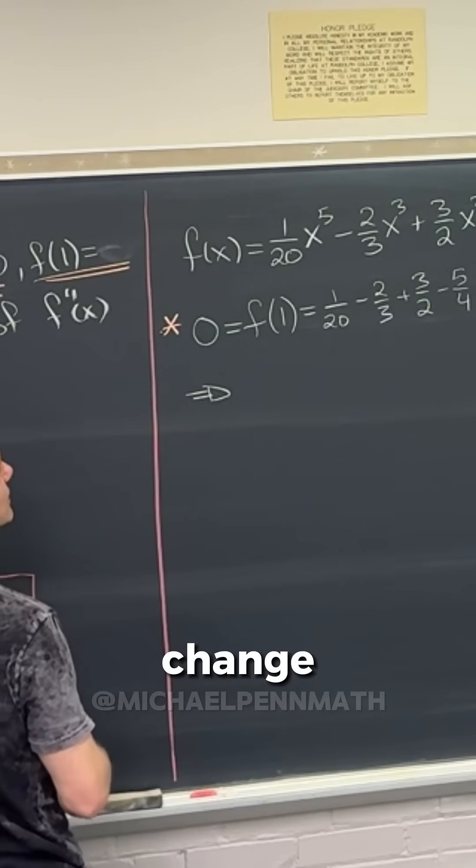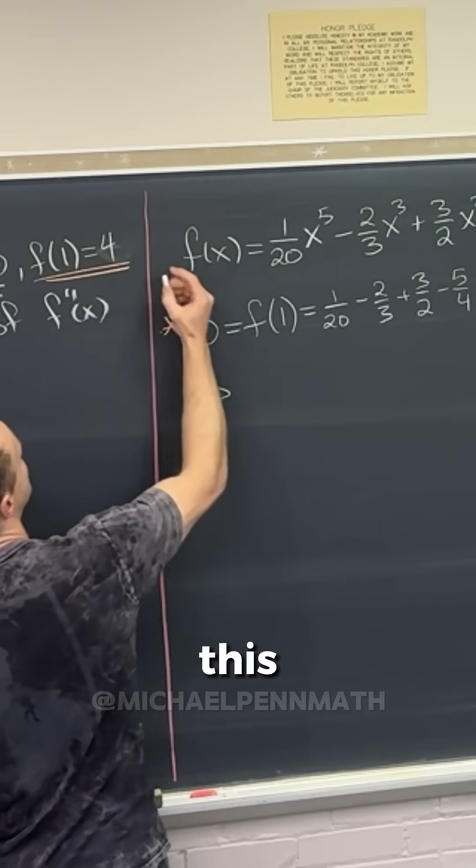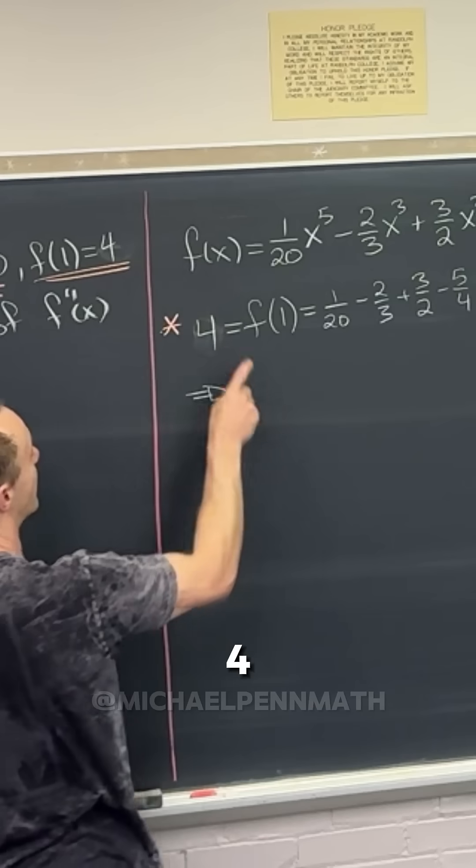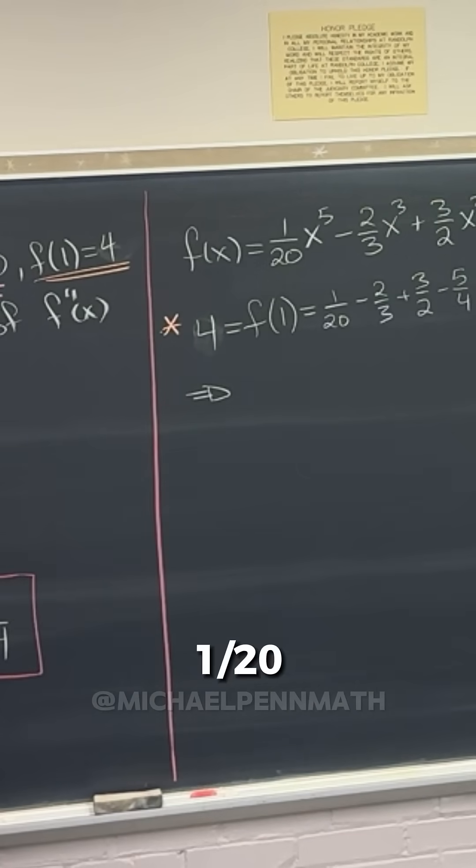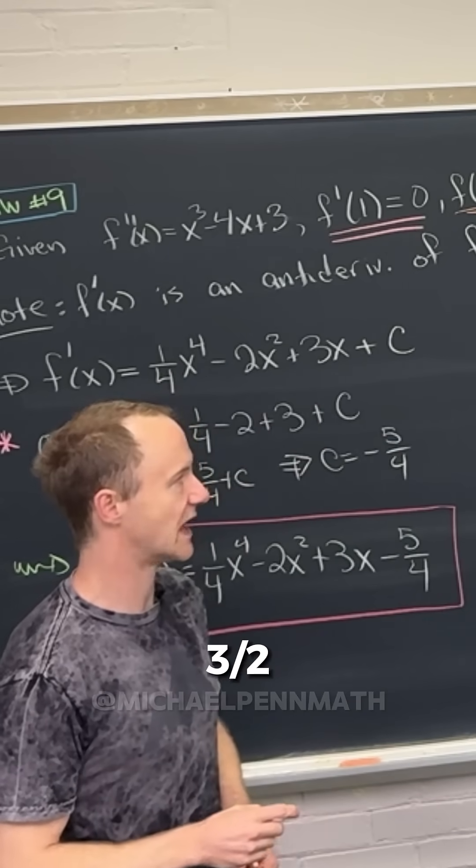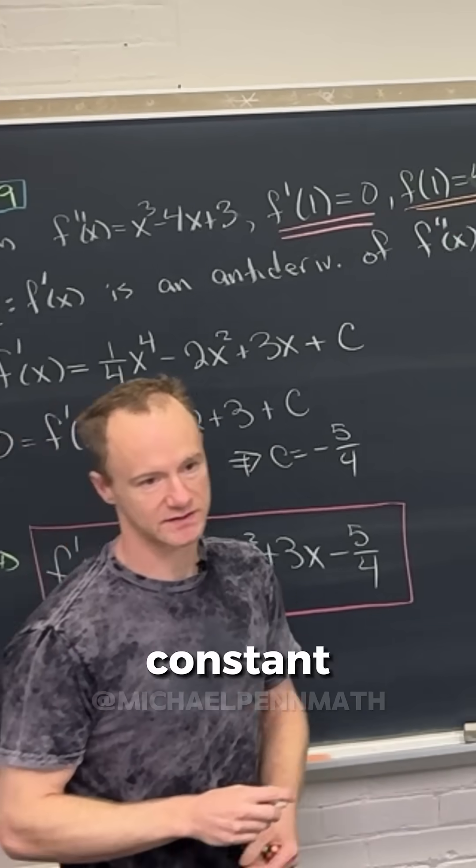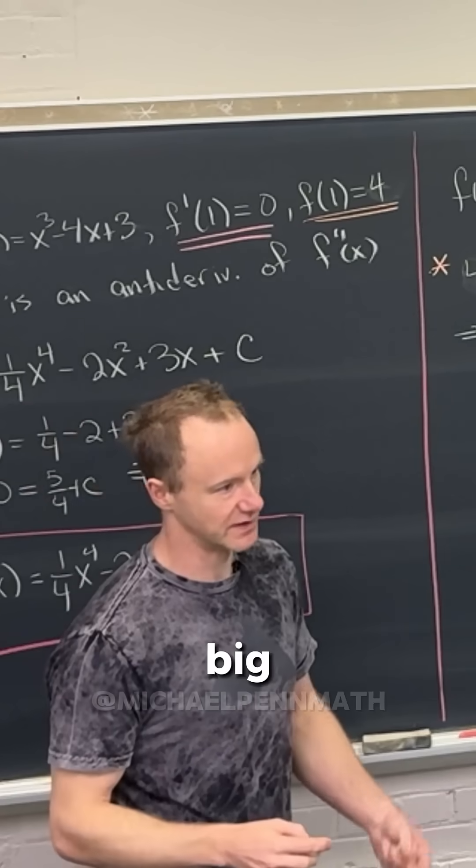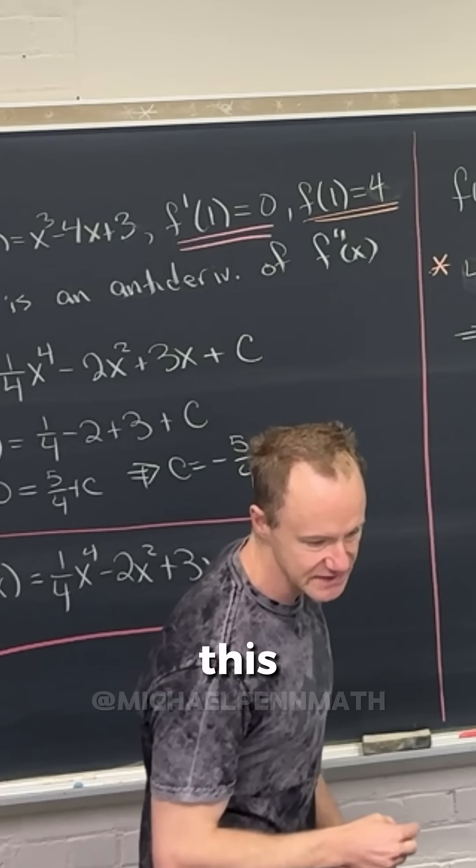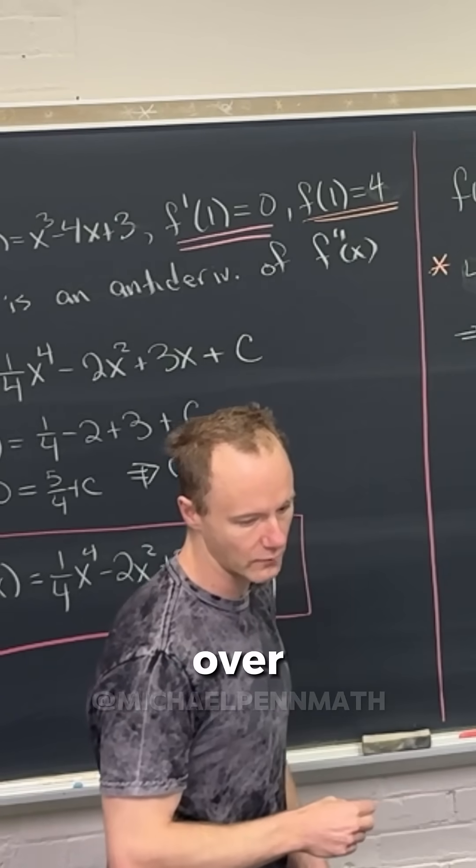But I mean, that didn't really change any calculation until this like very moment. So we have four is equal to f of one, which is a 20th minus two thirds plus three halves minus five quarters plus a constant. So again, you just do a big calculation.